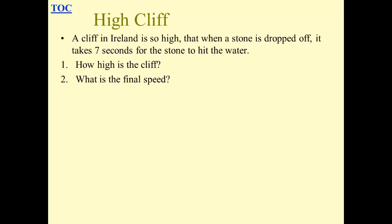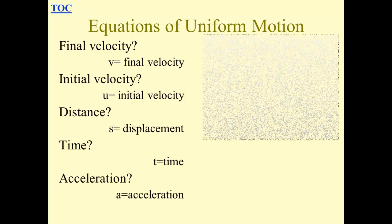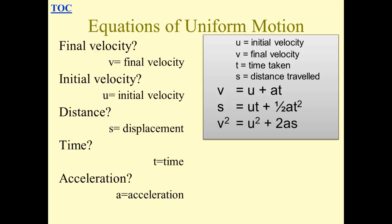What we want to find out is how high is the cliff. Also, what is the final speed? So we use the equations of uniform motion. We need to find the final velocity. U is the initial velocity, distance is S remember. Time is T and acceleration is A. And these are the Suvatt equations: V equals U plus AT, S equals UT plus half AT squared, V squared equals U squared plus 2AS.